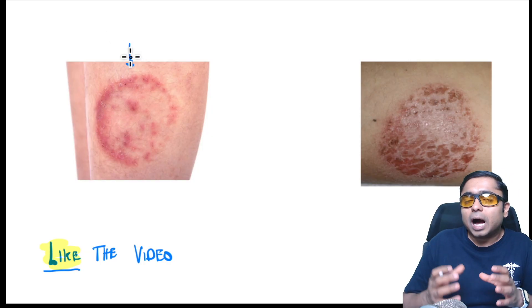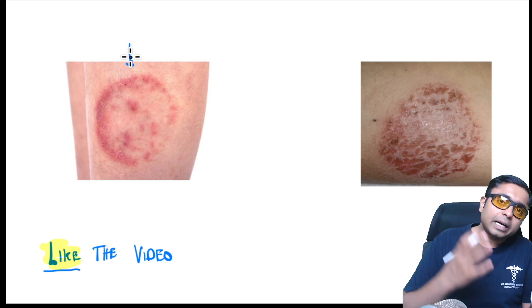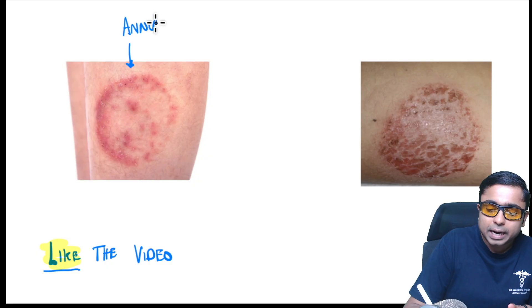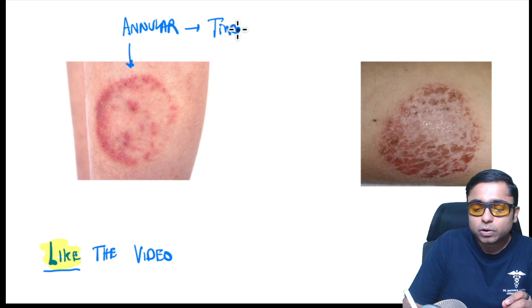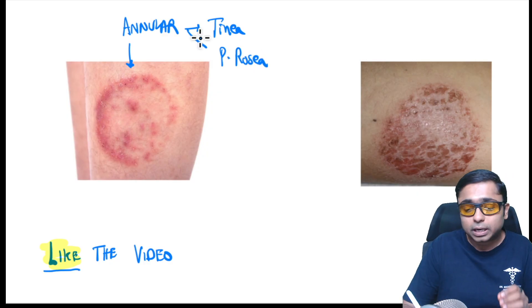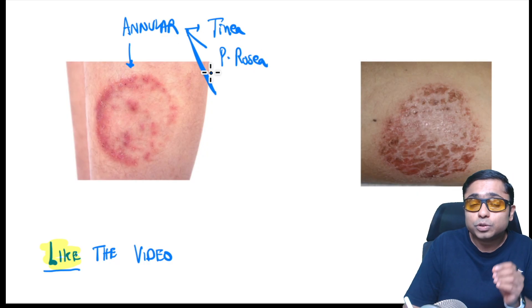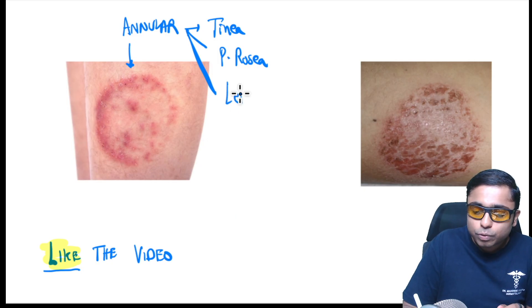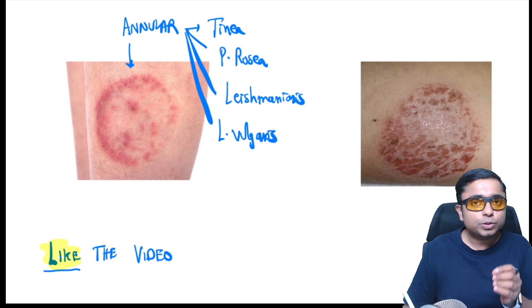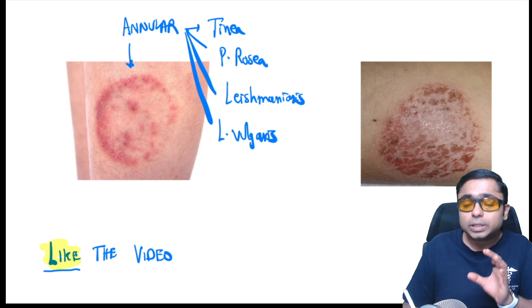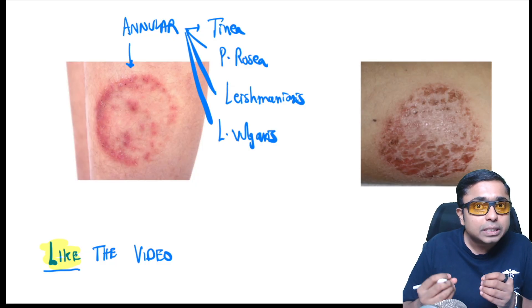Next is the shape of lesions. An annular lesion has a different center and different periphery. Diseases showing annular lesions include tinea, the herald patch of pityriasis rosea, cutaneous leishmaniasis, and lupus vulgaris — the most common type of cutaneous tuberculosis. A discoid lesion has both active periphery and active center and is coin-like; discoid lesions are seen in discoid lupus erythematosus and discoid or nummular eczema.